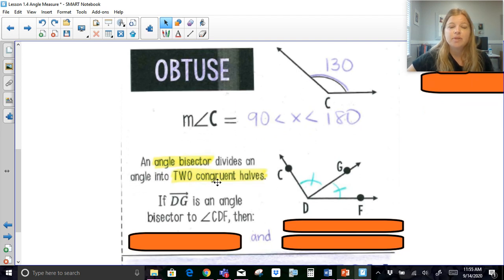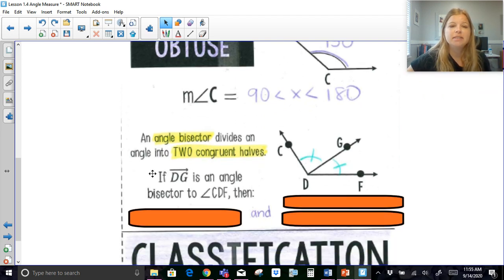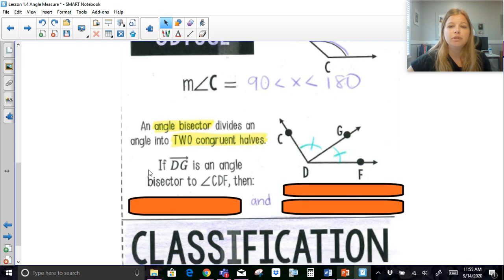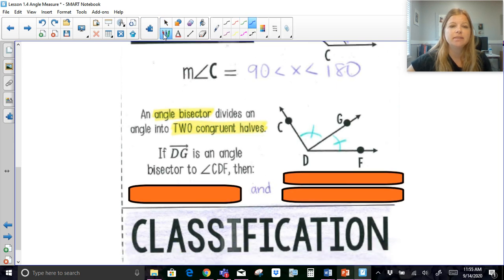An angle bisector. So the definition of an angle bisector is it divides an angle into two congruent halves. So here it says if ray DG, so let's take a look.